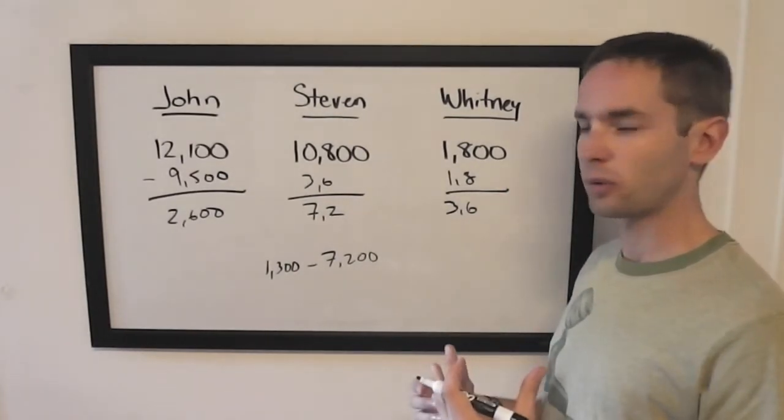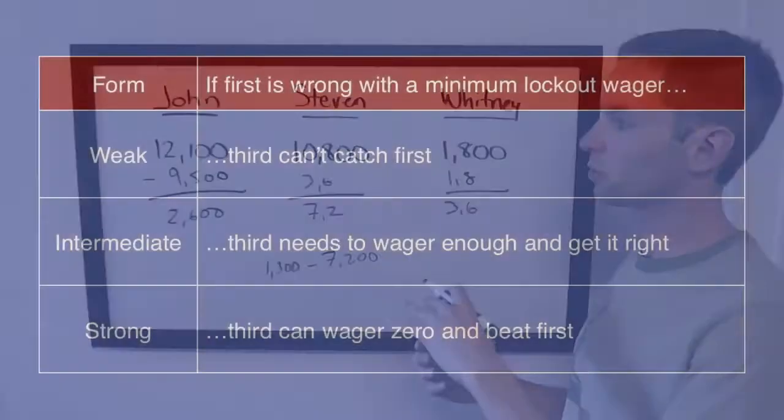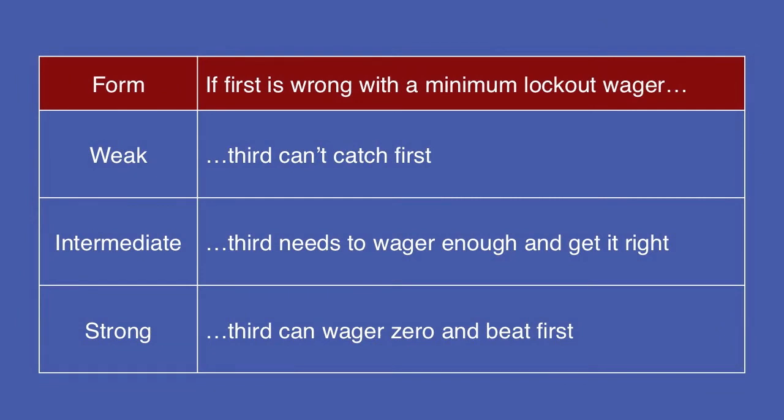So an intermediate situation is when first will fall to a point where third can catch him, but you'll have to get it right to do so.